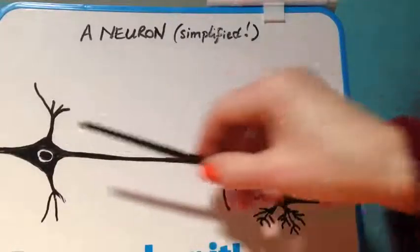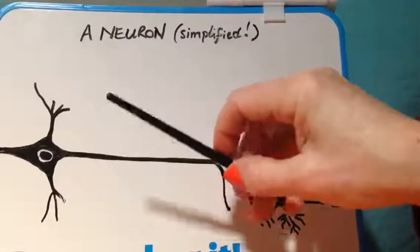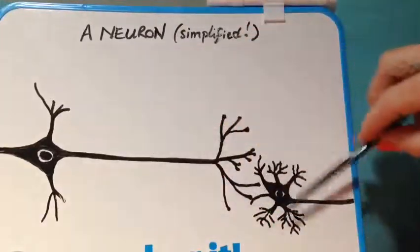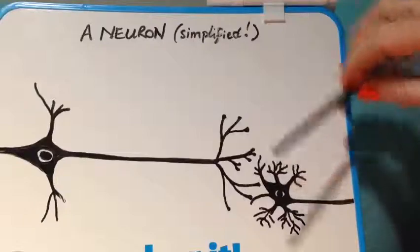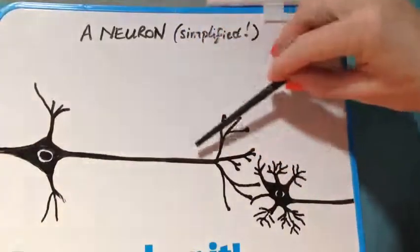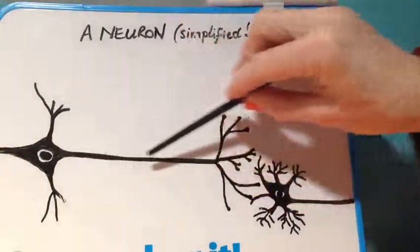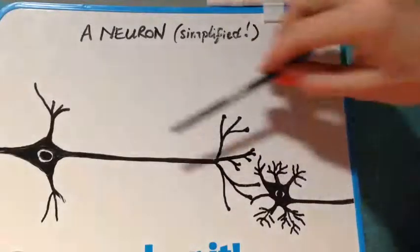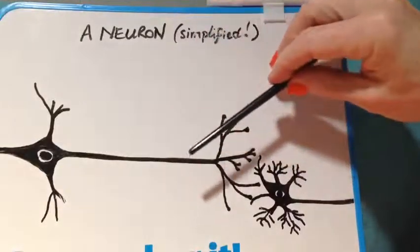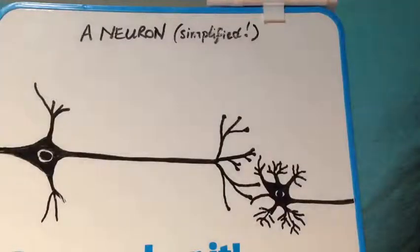We have dendrites which receive the information, and we have axons. So this cell has an axon here, this cell has an axon here, which transmit the information. When we learn things, the messages travel from one neuron to another down the axon.